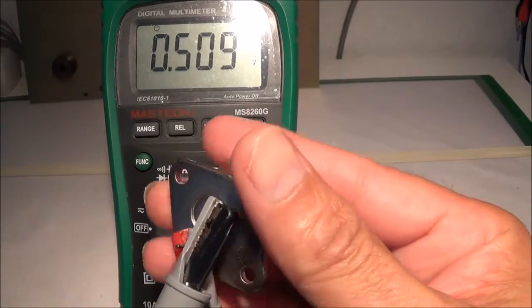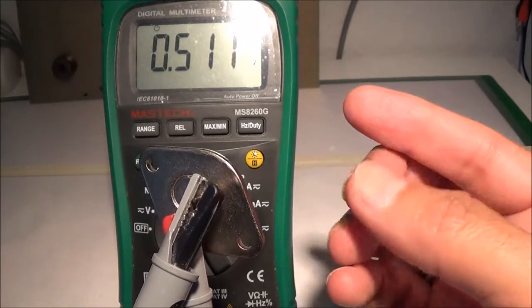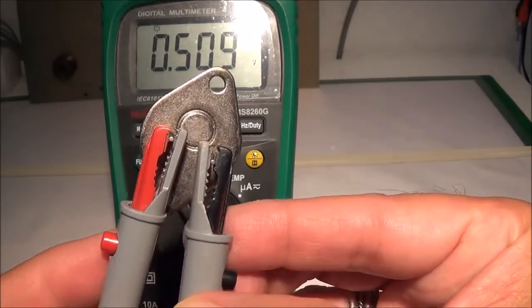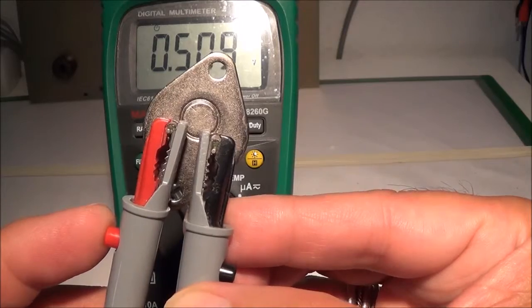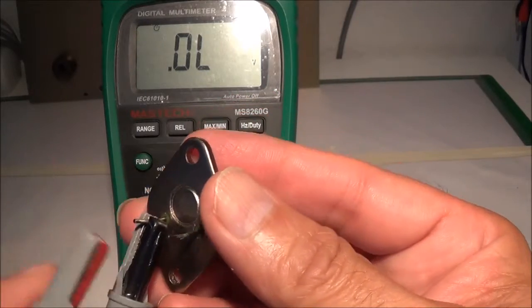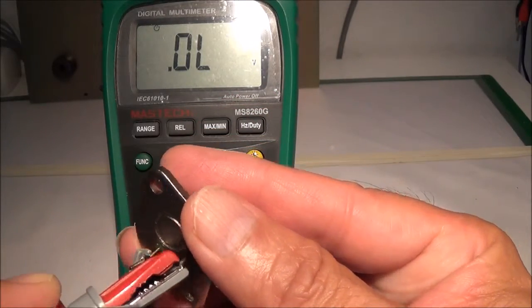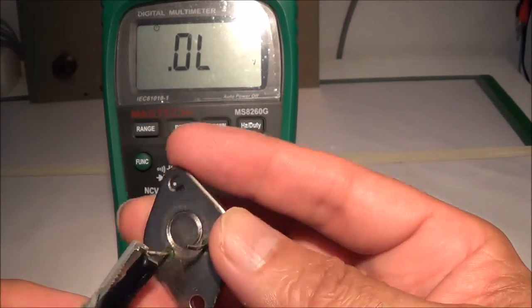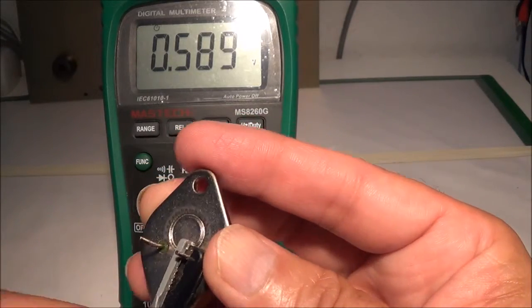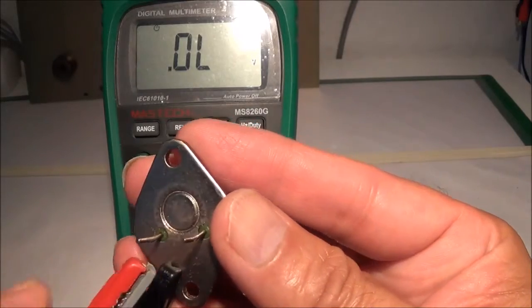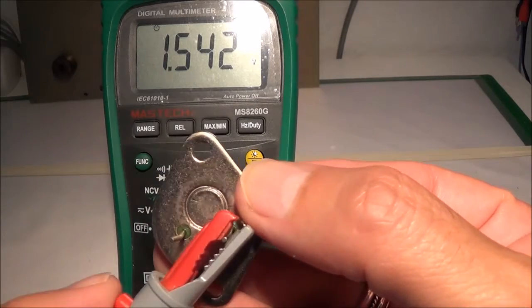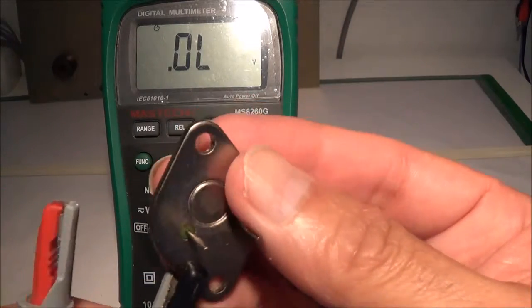And the other way around, which is 0.5. That's not right either. One of them should be showing basically an open, really high resistance, which it's not doing. Now to check between the base and collector. Reversing the leads. Same story. I would say definitely this transistor I'm going to have to replace.